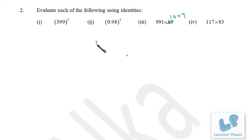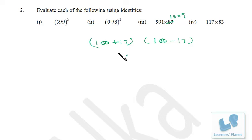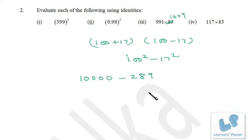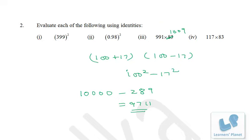For 117 × 83, note that 117 = 100 + 17 and 83 = 100 - 17. So it is (100 + 17)(100 - 17) = (a+b)(a-b) = a² - b² = 10000 - 289 = 9711. If you know algebraic identities, these calculations are simple. We'll take more problems in our next session, so do revise this session. Bye!